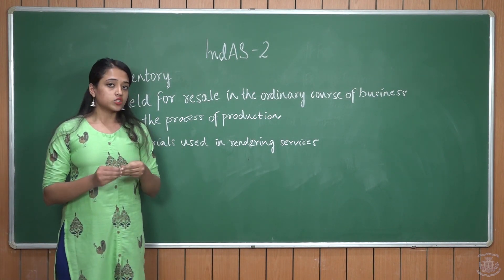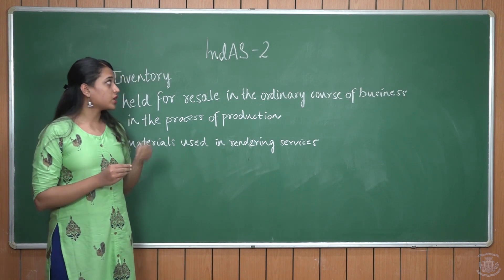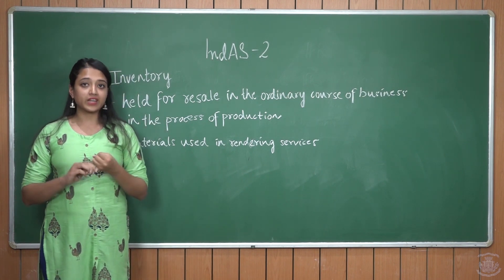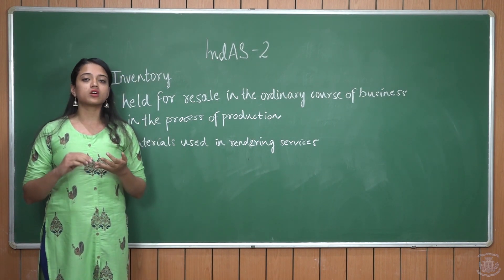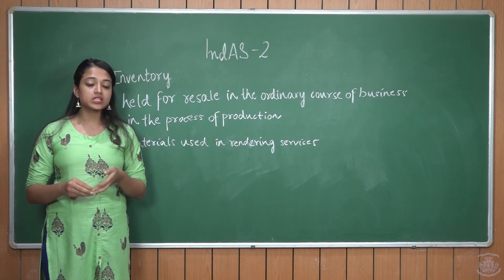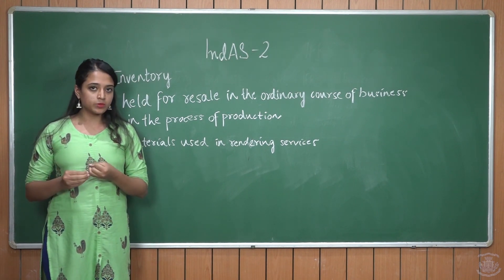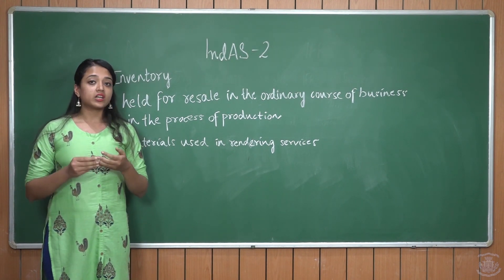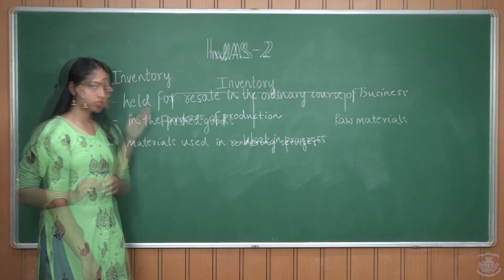Inventory does not include — the definition of inventory under Ind AS 2 does not include financial instruments like debt instruments or equity instruments, or biological assets like animals and agricultural produce at the time of harvest.